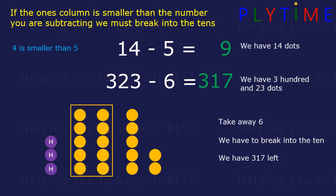In the first one, we can see four is smaller than five. And in the second, three is smaller than six. So the ones and the tens change.